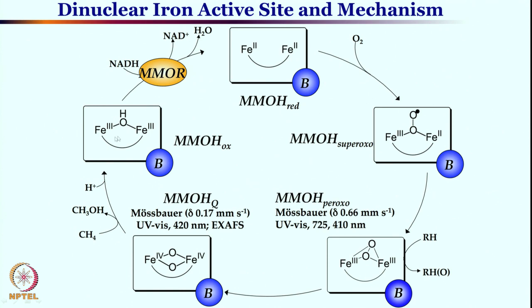Although these are unsymmetrical iron centers, they are fascinating centers which can activate methane. The active site is responsible for converting methane to methanol. The active site we discussed has a proposed mechanism — it stayed there for a while, but more importantly it has now been revised. This is the abbreviated form of the active core.